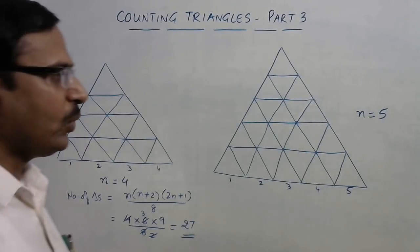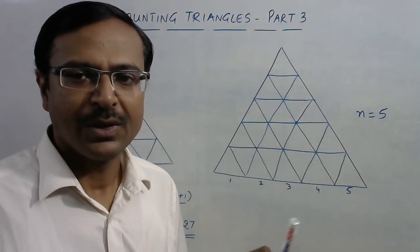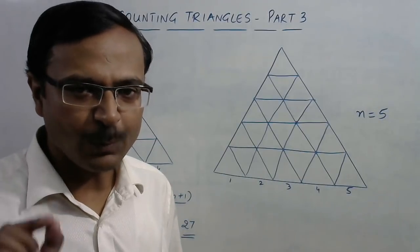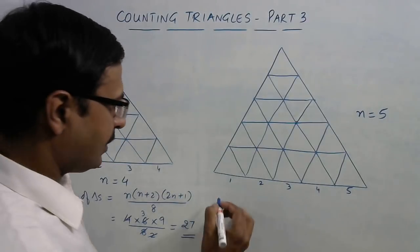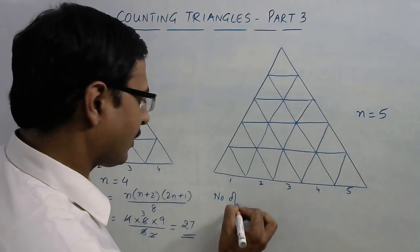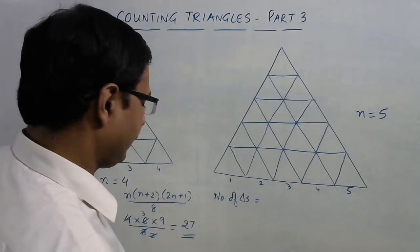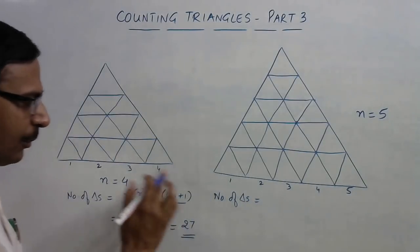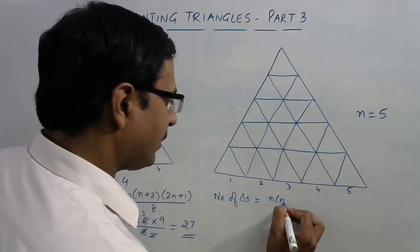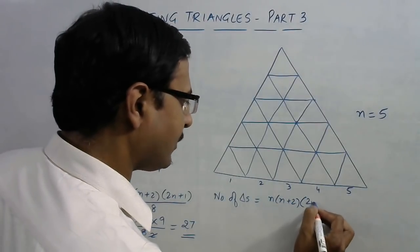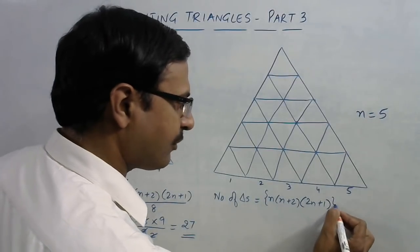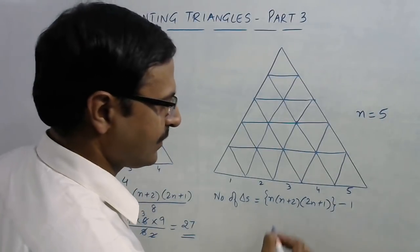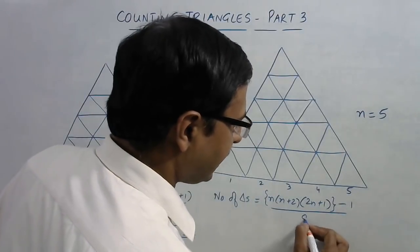But when it comes to odd number of triangles, we have to make a small change in the formula. Now in this case, the number of triangles will be calculated by writing the same formula: n(n+2)(2n+1), but after calculating this you have to subtract one from this and then divide it by eight.